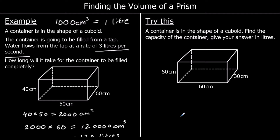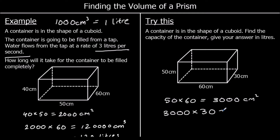And one for you to try — we've got a container in the shape of a cuboid and we need to find the capacity, the volume, in liters. The area of the front: 50 times 60. 5 times 6 is 30, multiply by 10 twice — 3,000 centimeters squared. Times how far back it goes, which is 30: 3 times 3 is 9, multiply by 10 four times — 90,000 centimeters cubed. To convert from centimeters cubed to liters we divide by 1,000, so that's 90 liters.